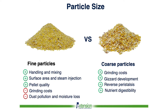However, excessively ground ingredients can increase grinding costs, lead to dust pollution, and moisture losses during grinding. Coarse particles reduce grinding costs, increase gizzard development, and reverse peristalsis, which can lead to better nutrient digestibility.